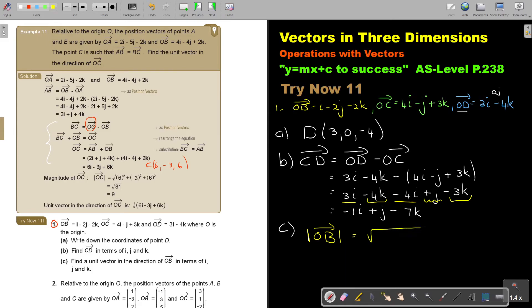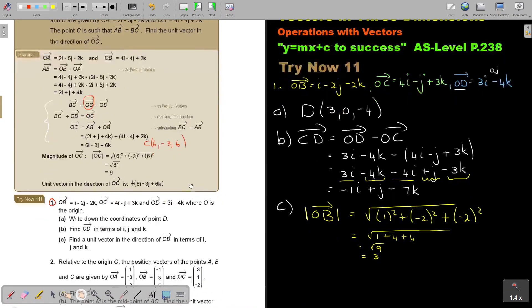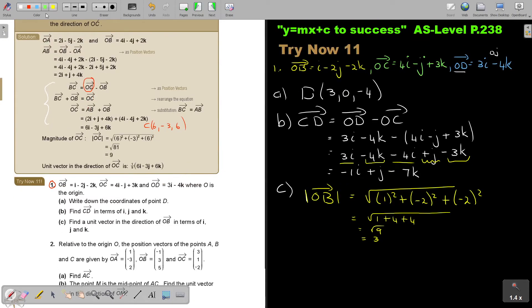OB is i minus 2j minus 2k. So the magnitude is 1 squared plus negative 2 squared plus negative 2 squared, which equals 1 plus 4 plus 4, the square root of 9, which is 3.